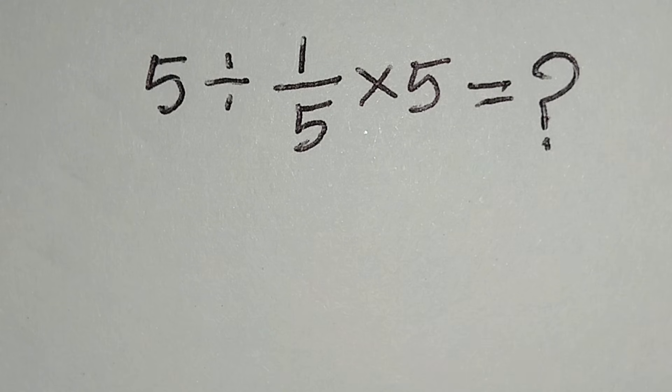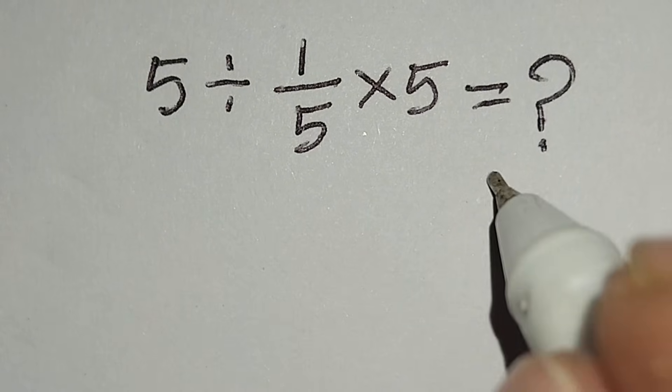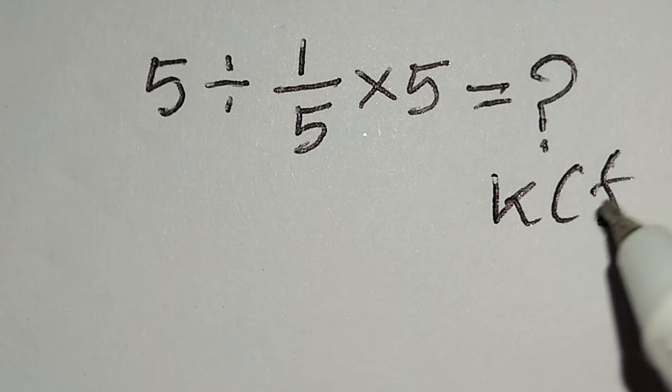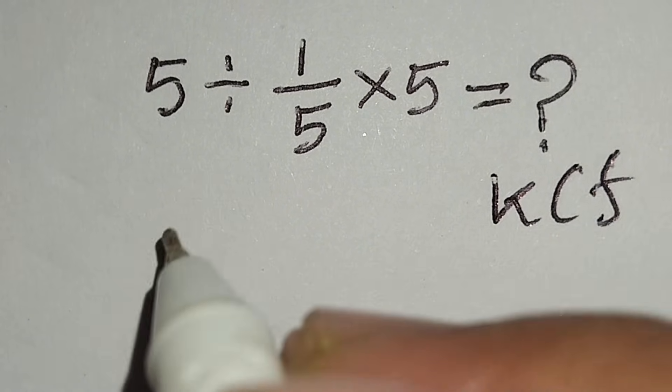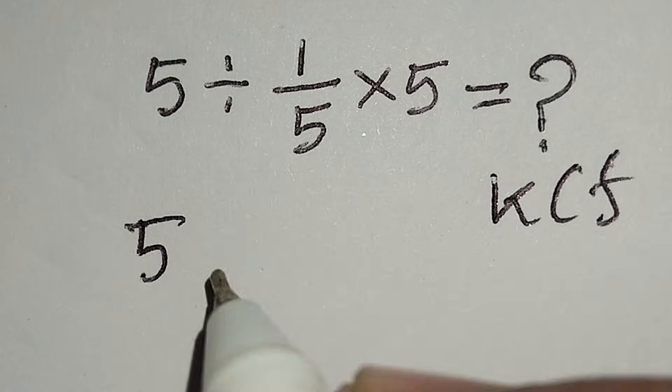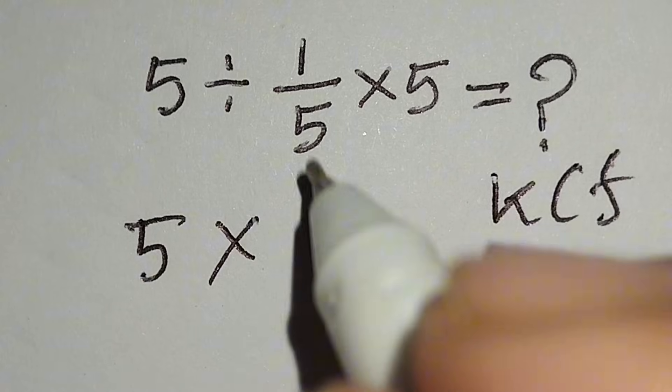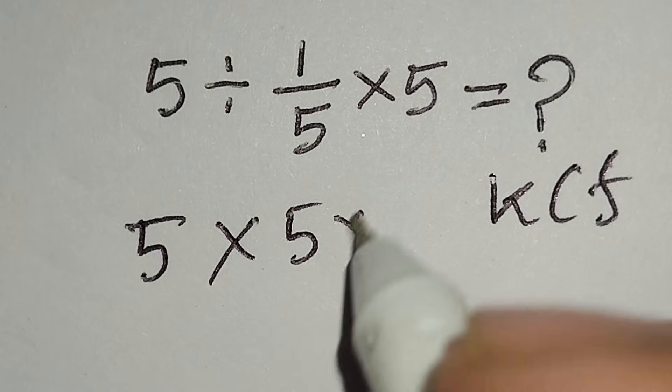Now I will apply the KCF rule to solve this math correctly. Here KCF: K for keep, C for change, F for flip. At first keep this fraction 5, change this division to multiplication and flip this 1 over 5, then 5 times this 5.